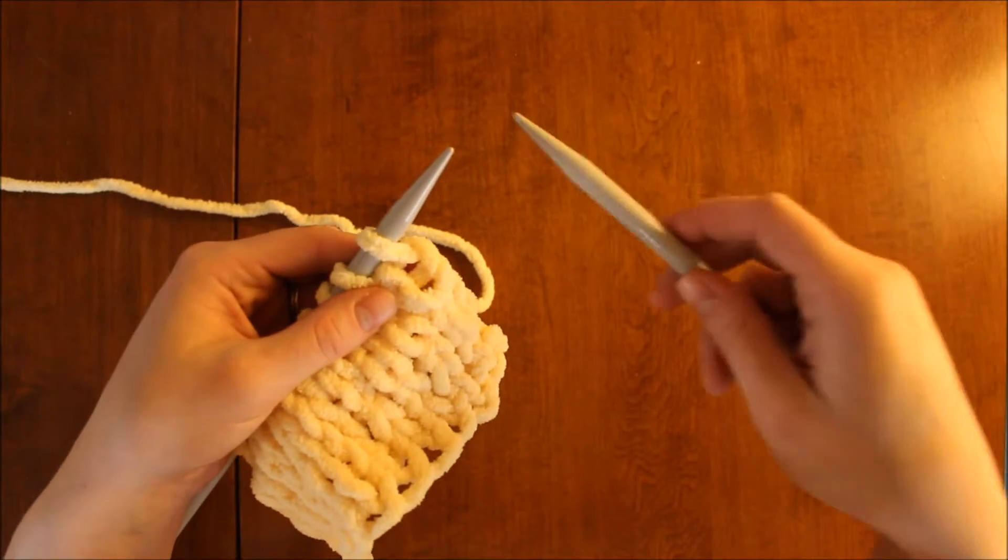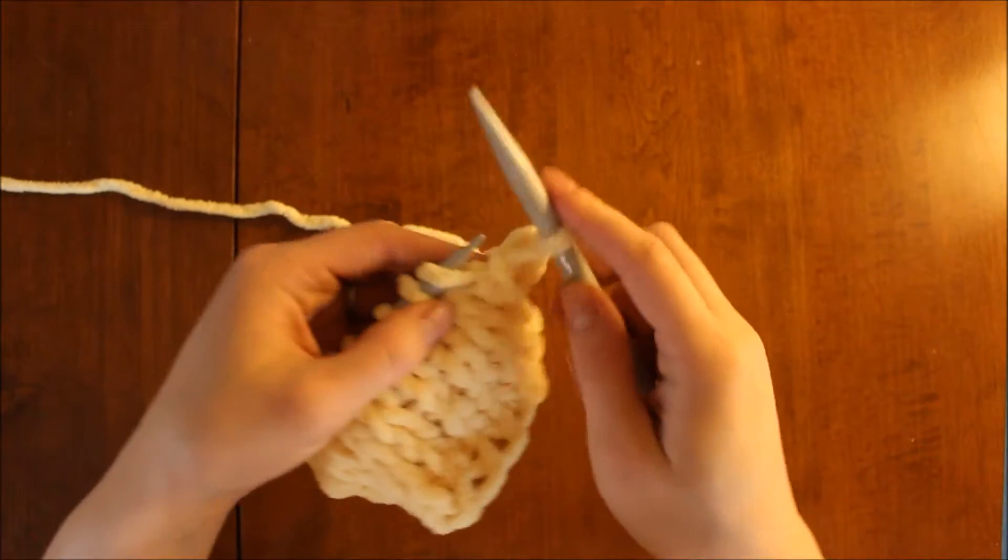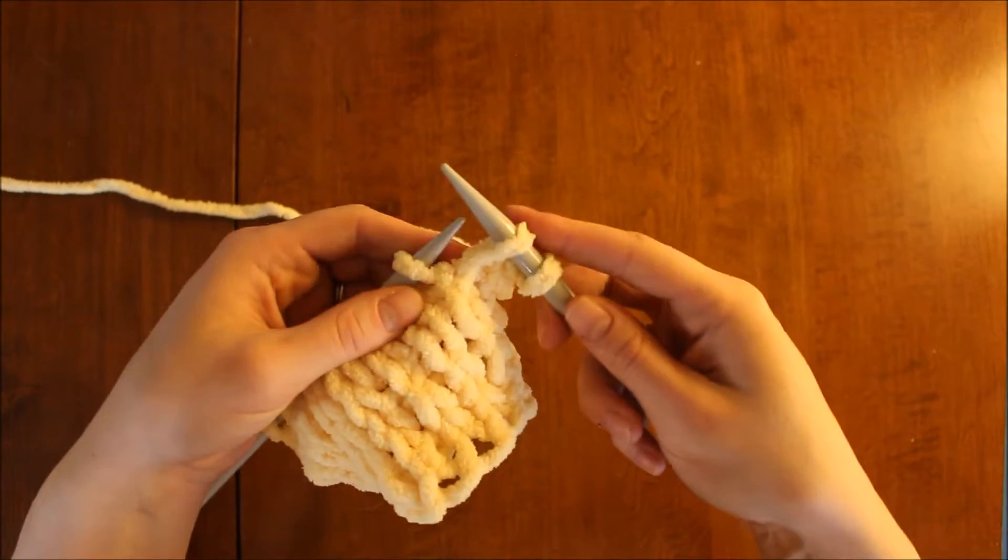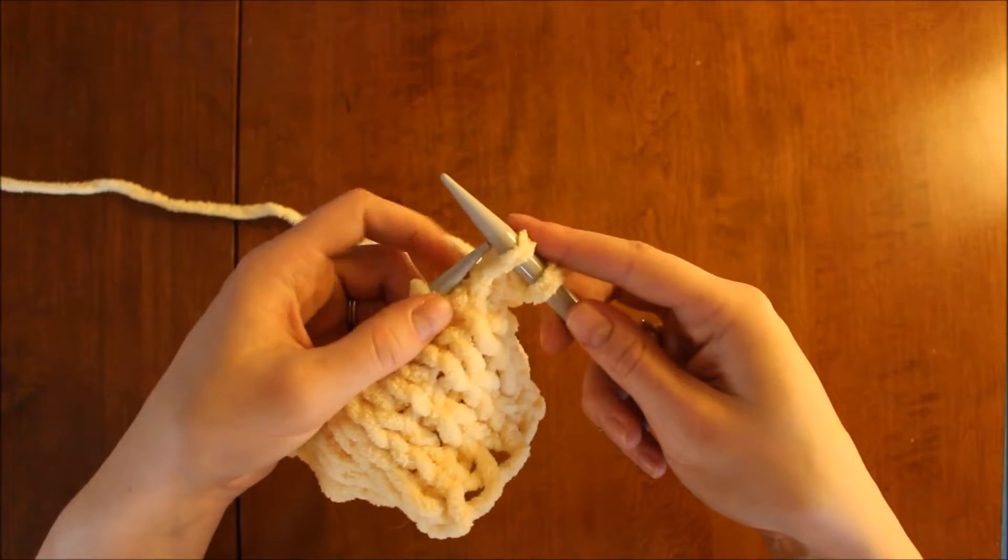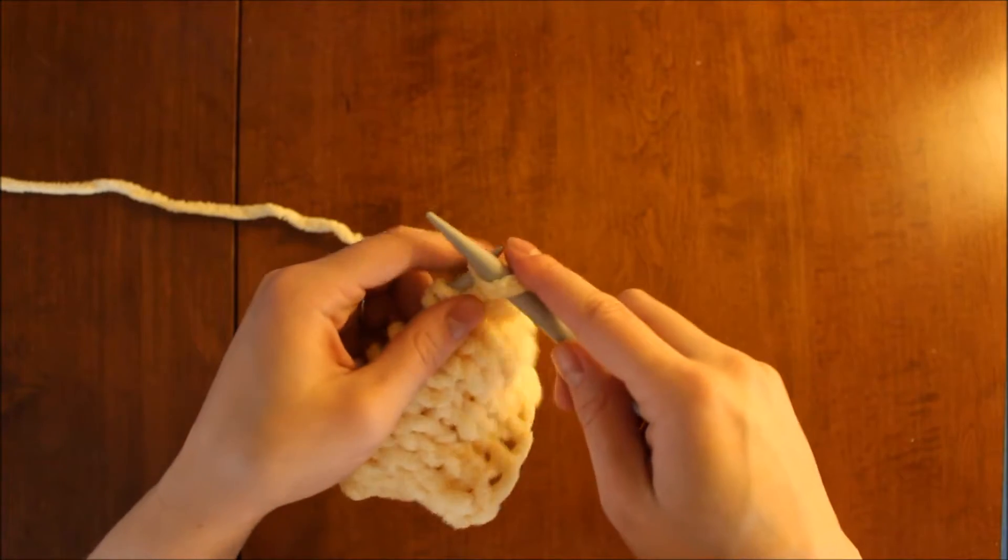So for example, if the pattern says slip two stitches knitwise, you're going to slip one and then two. And it basically means slip the stitches as if you were going to knit them. That's the knitwise part, as if you were going to knit them.